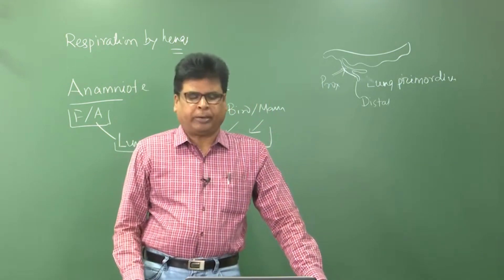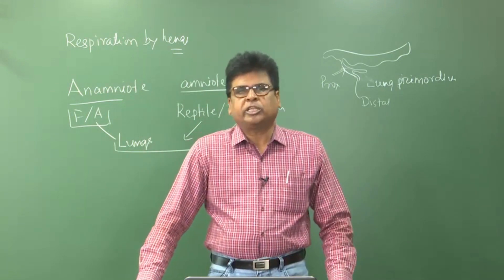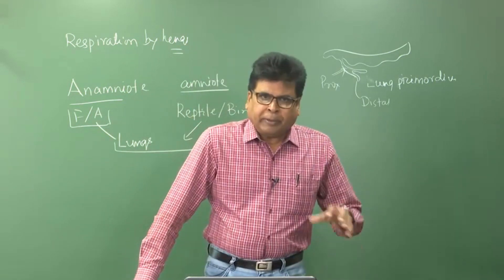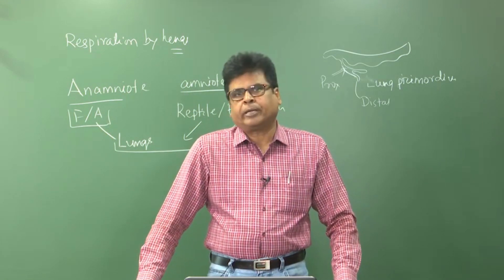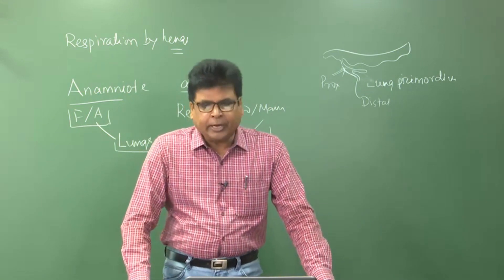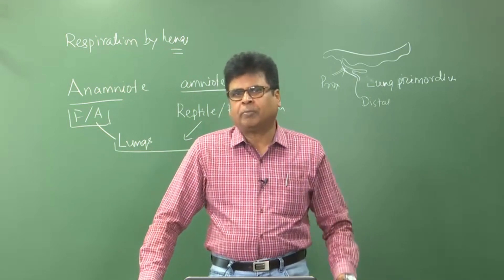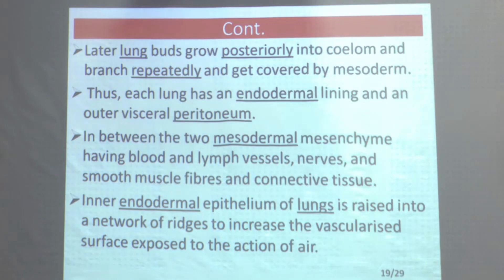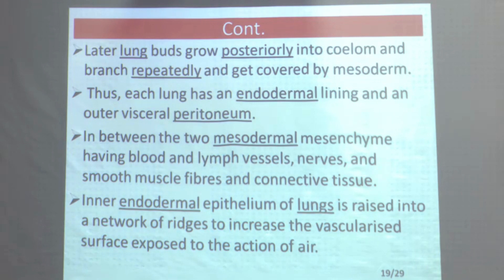Later in the course of development, the lung buds grow posteriorly into the coelom and branch repeatedly, getting covered by mesoderm. The lungs are thus covered by mesoderm. Each lung has an endodermal lining and an outer visceral peritoneum. In between these two, mesodermal mesenchyme containing blood and lymph vessels, nerves, smooth muscles, fibres, and connective tissue is present.